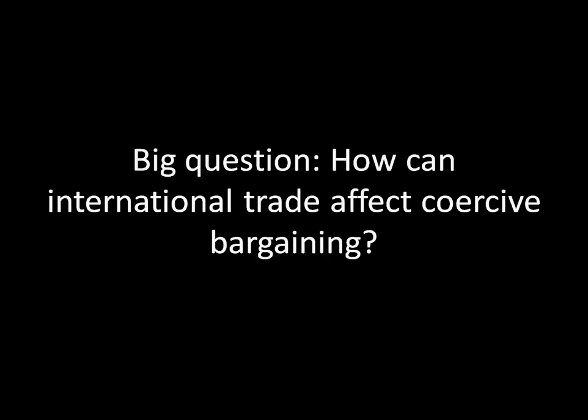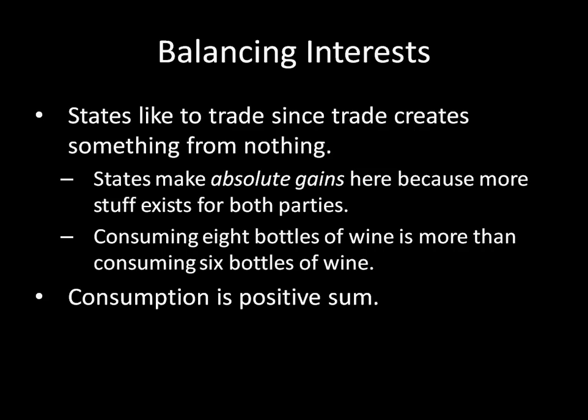We know about the good side already. This is the idea that states like to trade with one another, since trade creates something from nothing. That's the surplus — if we are specializing in what we're better at making compared to the other guy, we can actually create more stuff by trading with one another than we would be able to create if we were just consuming and producing on our own. So states make what we call an absolute gain here, because more stuff exists for both parties. When there's that surplus, there is more stuff to go around, and so in absolute terms there's more stuff. Consuming eight bottles of wine is better than consuming six bottles of wine — eight bottles in absolute terms is more. This means that consumption is positive-sum, where if we are working together cooperatively, we can actually produce more stuff.